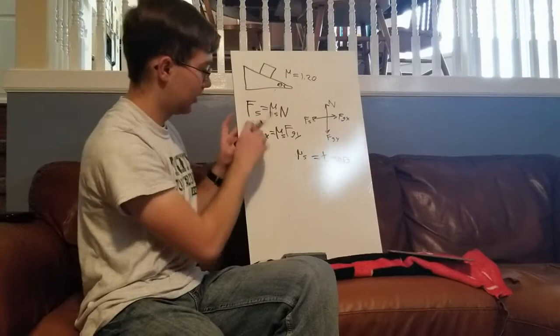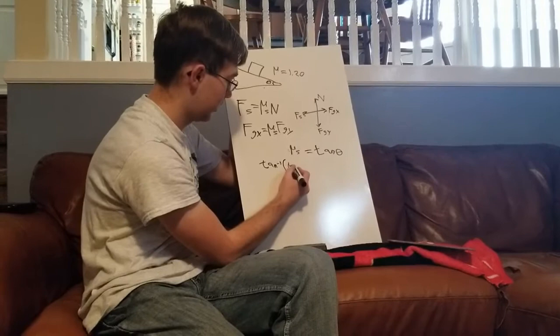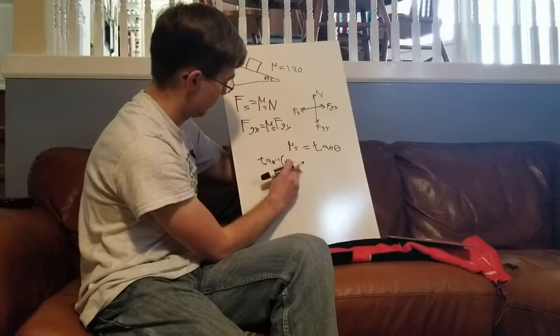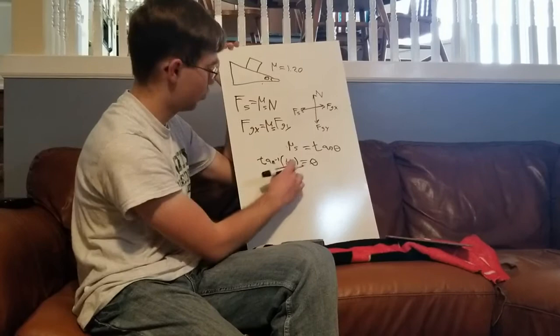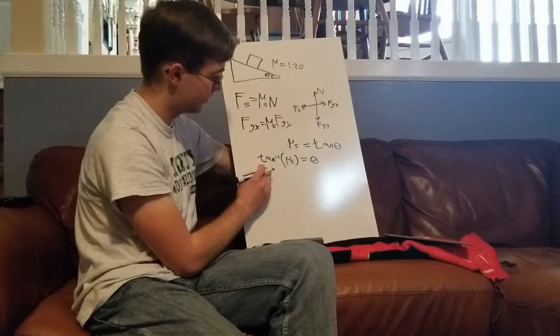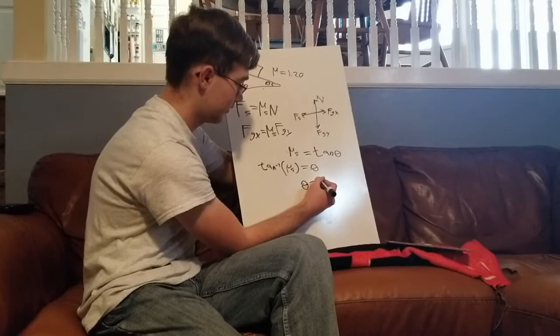What I can do now is say that the inverse tangent of my constant of static friction equals theta. So my constant is 1.2 and the inverse tangent of 1.2 equals about 50.1 degrees and that's my answer.